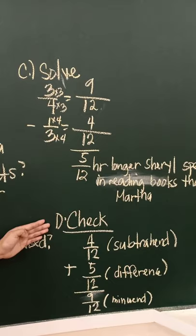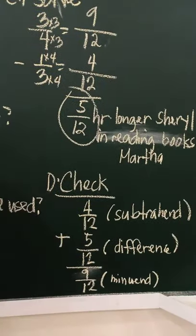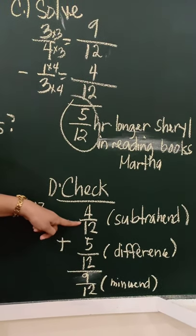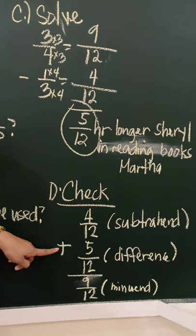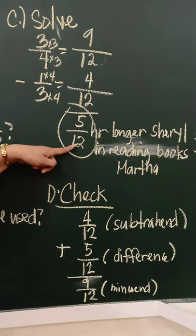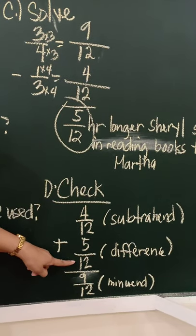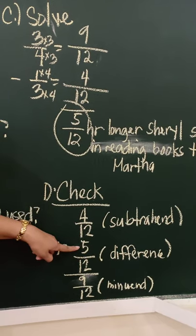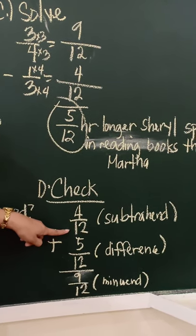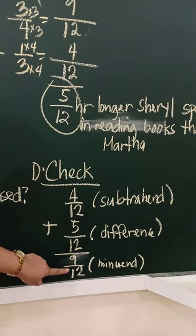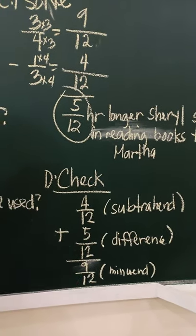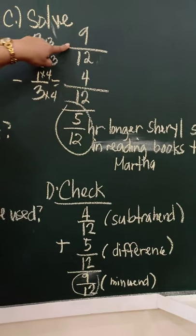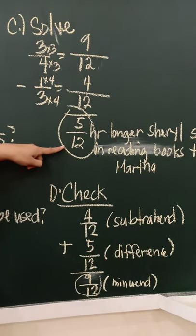The last step is to check. Let's check if our answer five-twelfths is correct. How are you going to check? You add the subtrahend and the difference. So, difference is the answer of subtraction. They have the same denominator. Proceed to addition. We add only the numerators. Four plus five is nine. Then just copy the common denominator twelve.